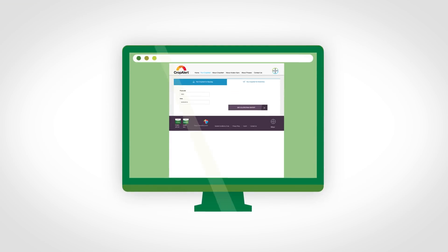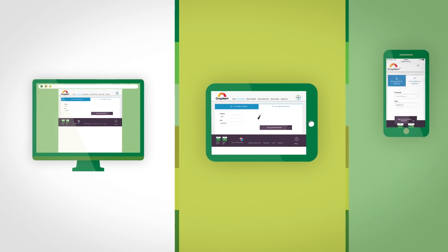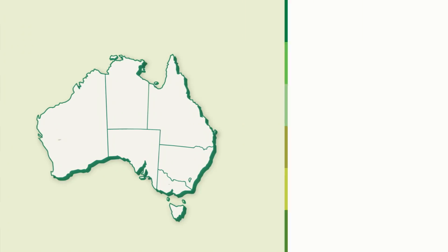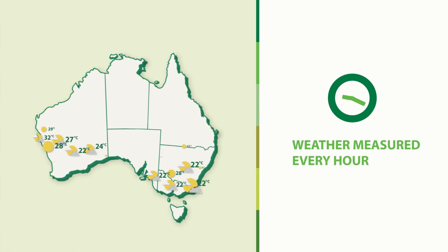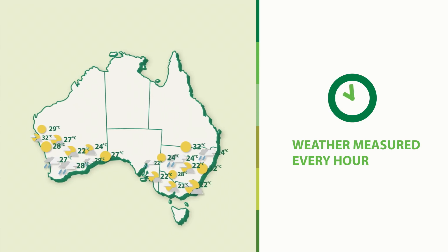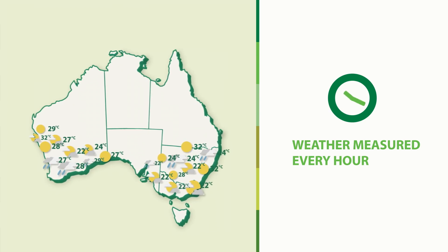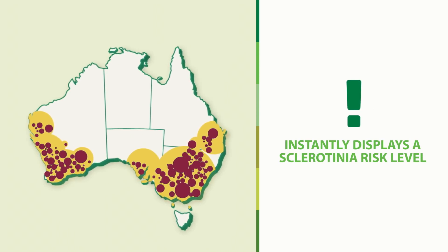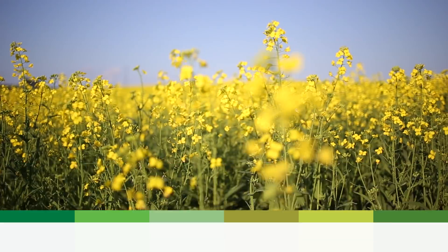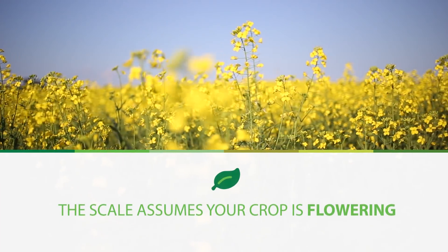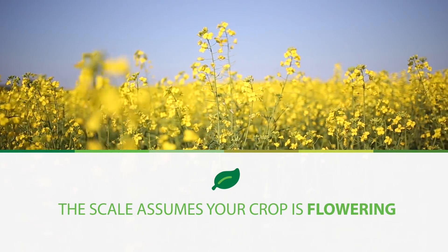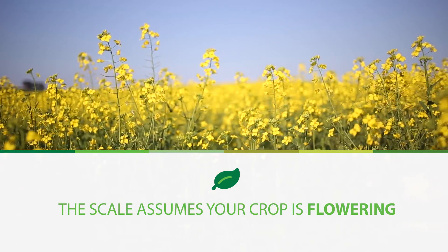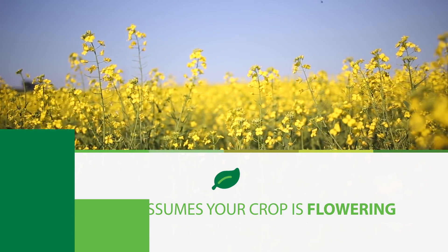A free and easy to use online tool, CropAlert uses hourly measurements of relative humidity and temperatures specific to your postcode to calculate and display the sclerotinia risk level. With early flowering to full bloom being the critical period for potential infection, the scale assumes your crop is flowering.